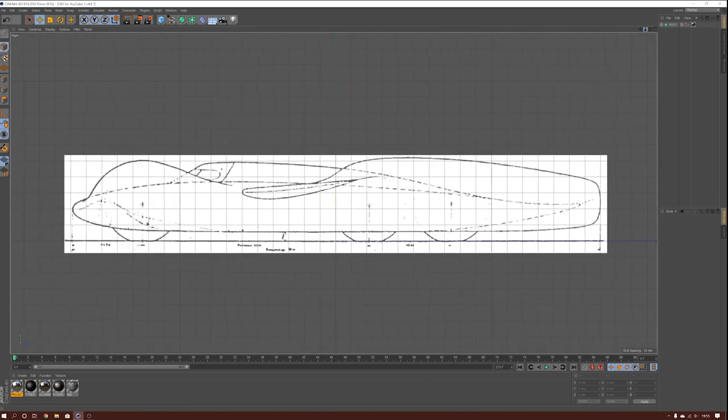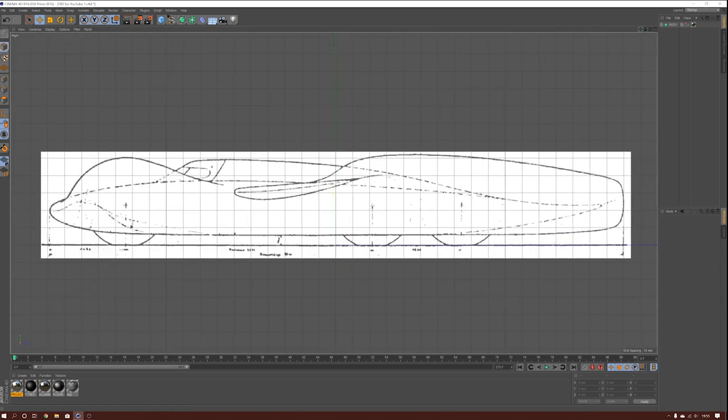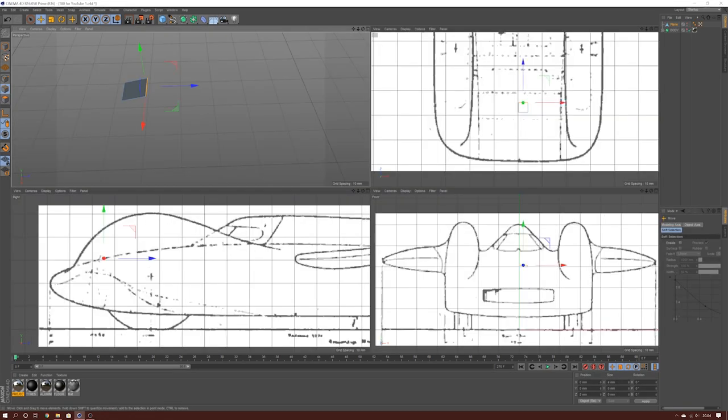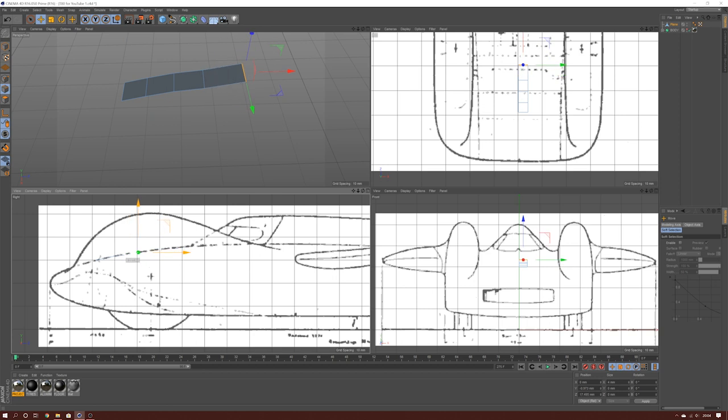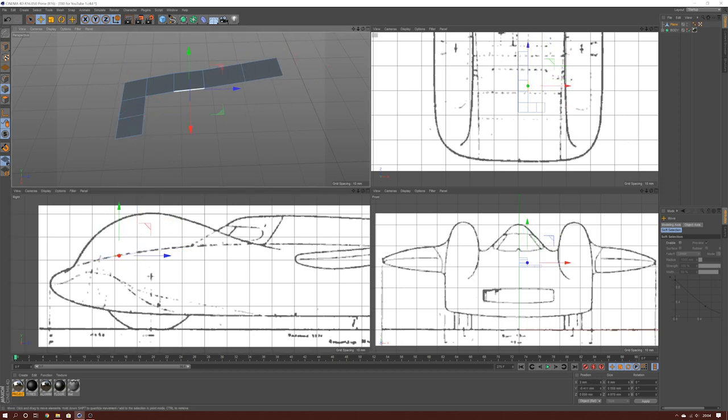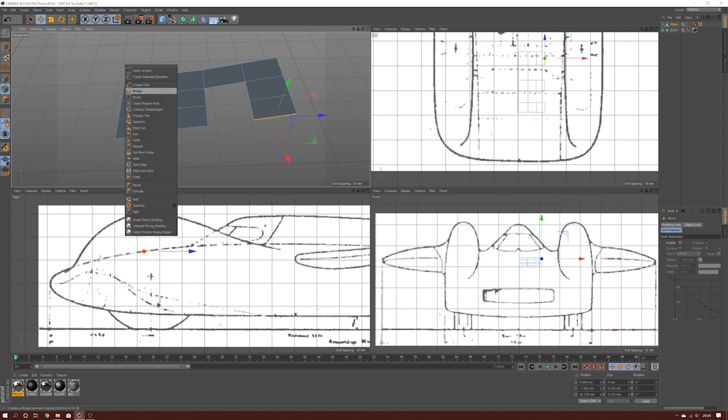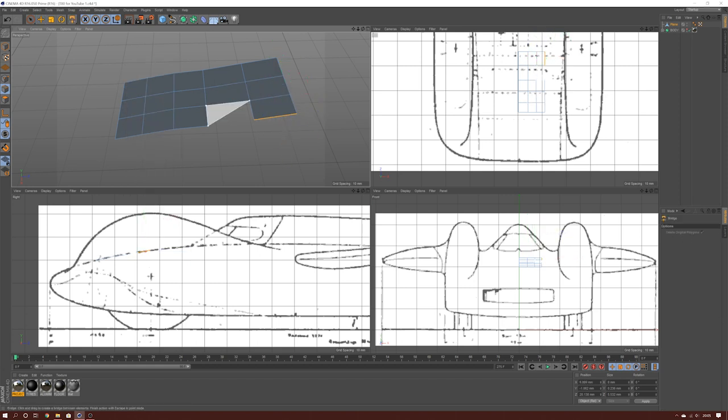I had to model the T80 using a technique I'd never used before but always wanted to learn, called Polygon Modelling. This involves starting with a small square and progressively adding to it to form a mesh in the basic shape of the subject. I can edit the faces, edges, and points that make up the mesh to recreate the surface of the T80. I've never done this before, but after a while it became very therapeutic and actually quite easy once I got the hang of it.